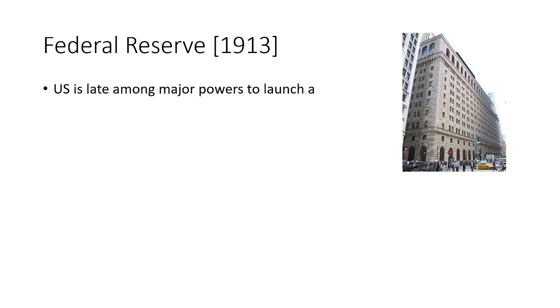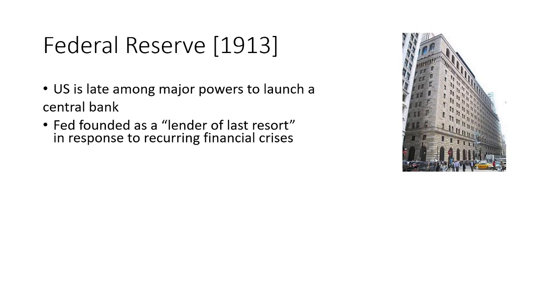Now the Fed — we'll be talking a lot more about it, so just briefly here. The Fed is established in 1913, which is pretty late among major world powers, since Britain had already had a central bank for over 200 years and France for 100 years. The Fed is also unique in that it's not founded expressly to lend money to the government — it's founded expressly to lend money to banks. So this is pattern three: a bank explicitly established to aid its own country's banking system rather than its own government. That's the lender of last resort function.